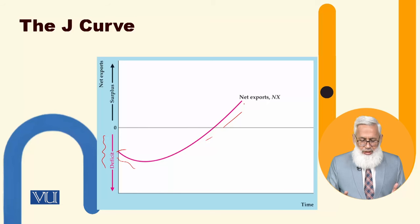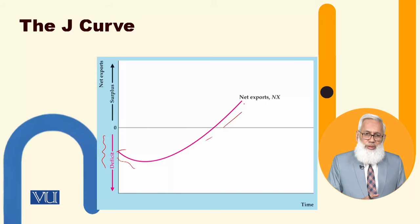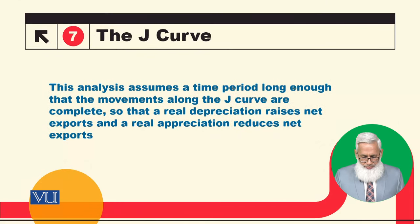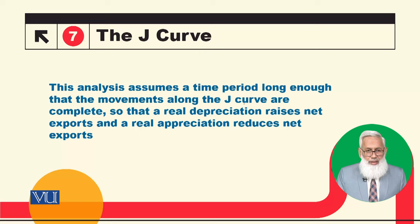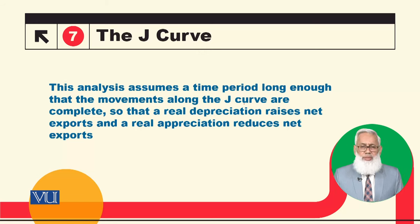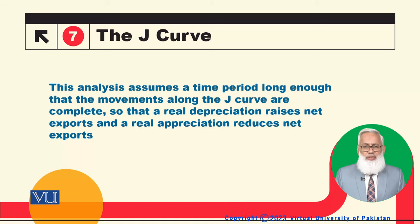The J-curve analysis assumes a time period long enough that the movements along the J-curve are complete, so that a real depreciation raises net exports and a real appreciation reduces net exports in the long term. In the short term, this relationship can be weak or even move in the opposite direction.